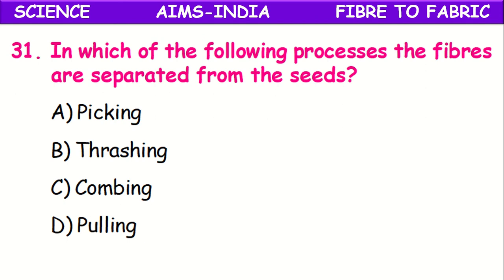In which of the following processes are the fibers separated from seeds? The process is called ginning. By ginning, seeds are separated from the fiber.